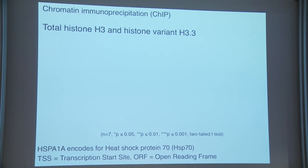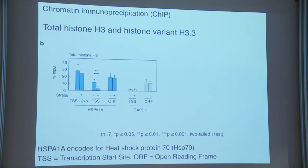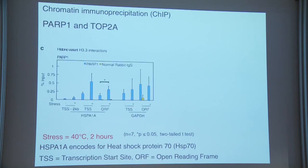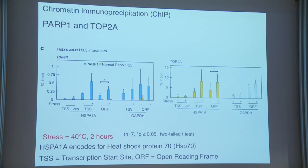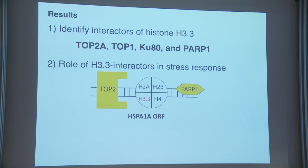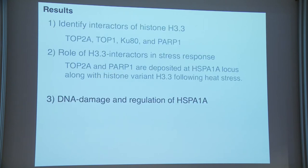Looking at total histone H3 at the HSPA1A locus, I found a significant decrease following low-dose heat stress — heating cells to 40°C for two hours, slightly above the normal 37°C growth temperature with no visible phenotypic change. However, H3.3 specifically showed a significant increase at the TSS and ORF of HSPA1A following the low-dose heat stress. I also found that PARP is increased at the ORF of HSPA1A following stress, and that TOP2 is increased at the ORF of HSPA1A following low-dose stress.